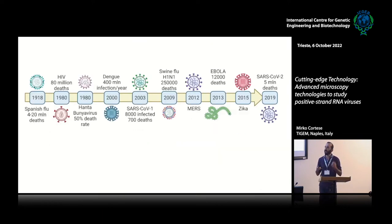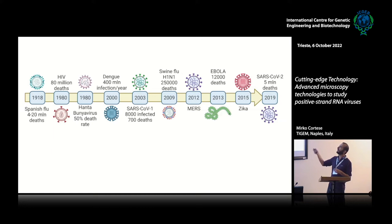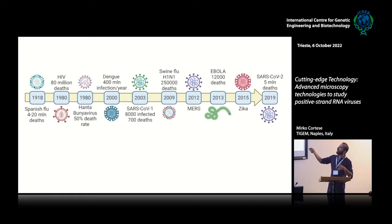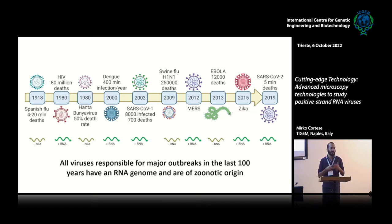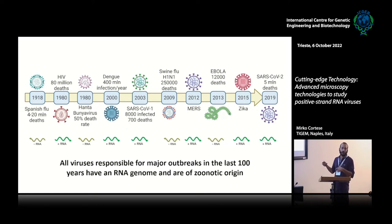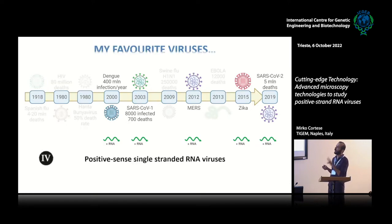Why should you be concerned about these viruses? Looking at the last 100 years, these are some of the most important pandemics: Spanish flu, HIV, dengue, swine flu, Ebola, and now SARS-CoV-2. What they all have in common is a genome that is either positive or negative RNA, and they are often of zoonotic origin — they come from wildlife. So if something will kill us in the future, it's probably a positive-strand RNA virus. The 2019 SARS-CoV-2 pandemic teaches us a lot.